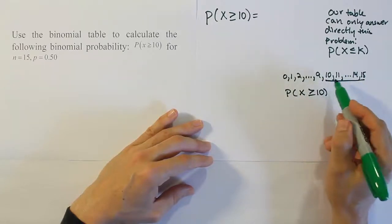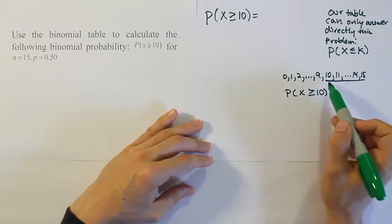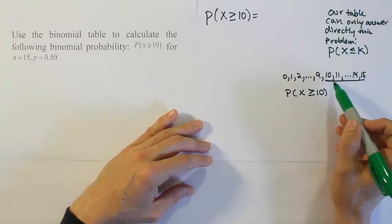So if I give it 10, the table's gonna give me 10 down to 0. That's not what I want. I want from 10 up to 15. So I gotta find a way to trick it.